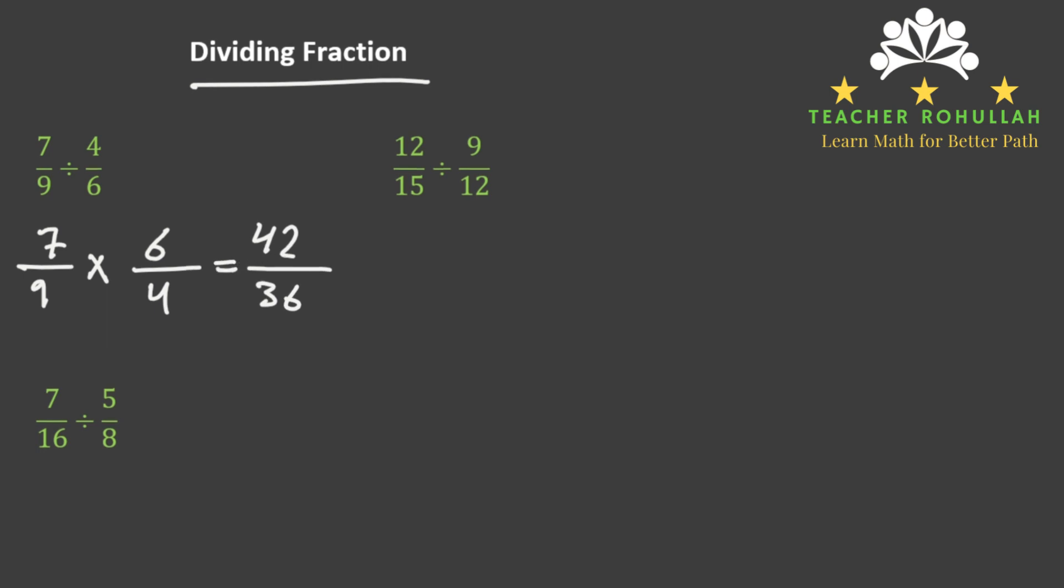So we can simplify them. We can divide both by 6. 42 divided by 6 is 7, and 36 divided by 6 is 6.